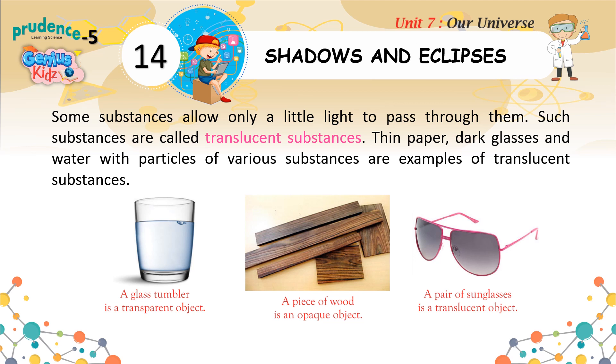Some substances allow only a little light to pass through them. Such substances are called translucent substances. Thin paper, dark glasses, and water with particles of various substances are examples of translucent substances.